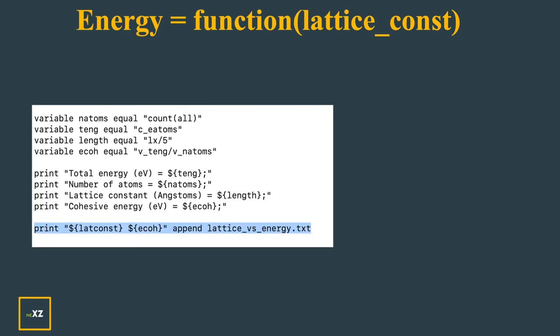Now I define the variables. You know these variables which count all atoms and store in number of atoms and count the total energy of the atoms and store in total energy and I have 5 unit cells along each direction. The length is half, the length is nothing but the lattice parameter. The lattice constant is nothing but the length for one unit cell. That is what I store here in lattice constant and I have the cohesive energy.